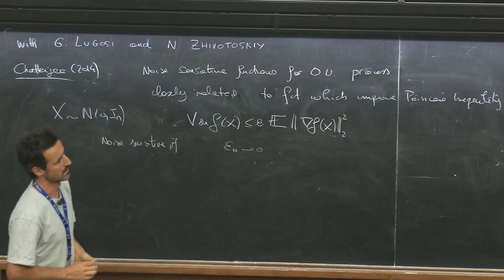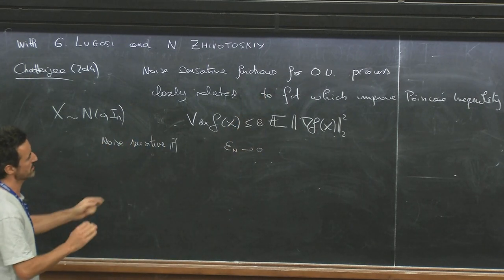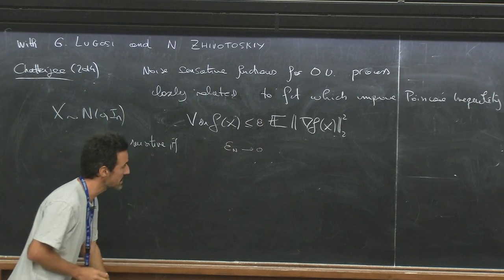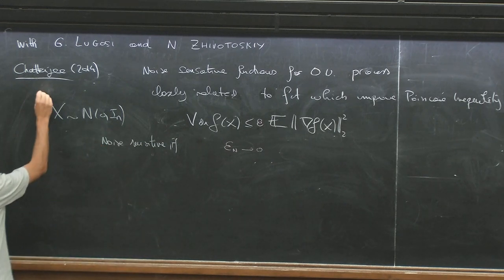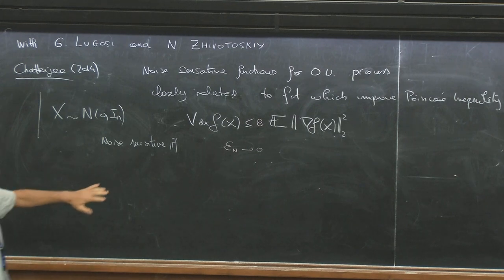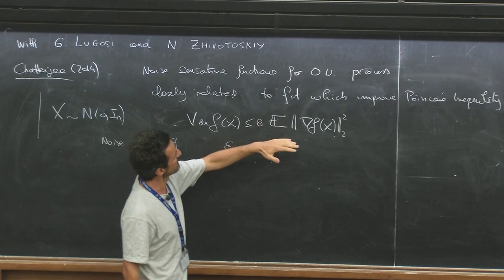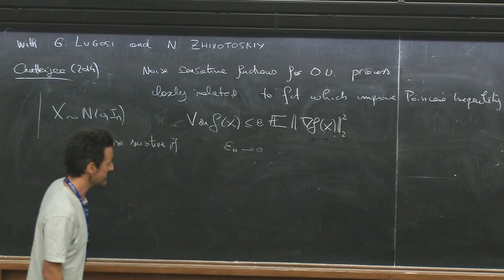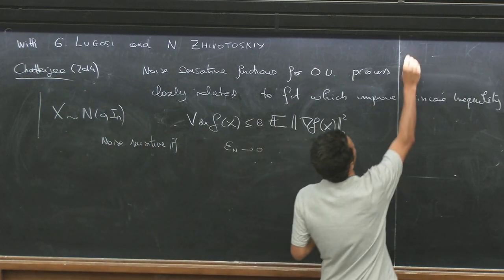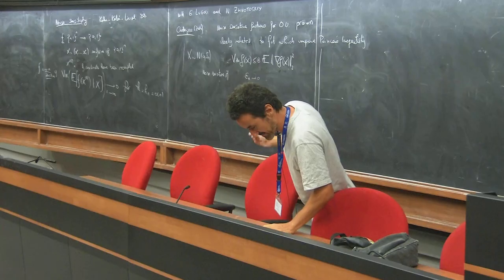Why I mentioned that: if you want to look in discrete settings for candidate functions for which you should have noise sensitivity, it should be functions such that the variance is much less than the expectation of the gradient.